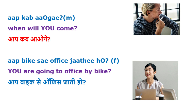Now two more examples: the first is talking to a man — aap kab aaoge, meaning 'when will you come' — using the future tense with the aap and aaoge combination. The second is talking to a woman — aap bike se office jaati ho, meaning 'you are going to office by bike.' Theoretically it would be jaati hai, but with the aap-ho combination it becomes jaati ho. Because it is a lady, it is jaati ho, not jaate ho.